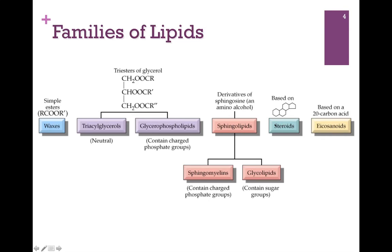Steroids, like cholesterol, are built from isoprene. And finally, we have eicosanoids that are signaling molecules. We'll look at that in Chapter 10.